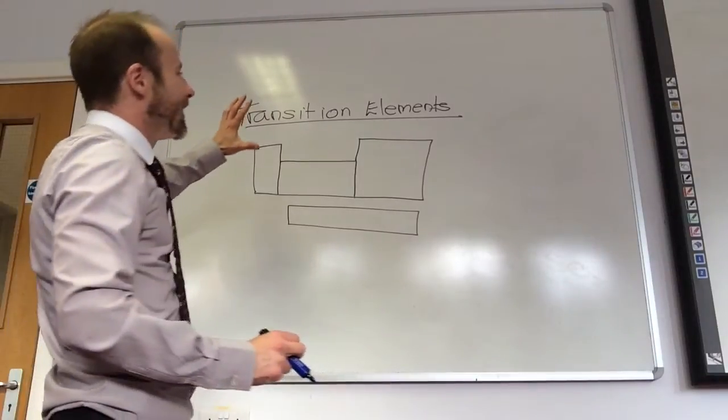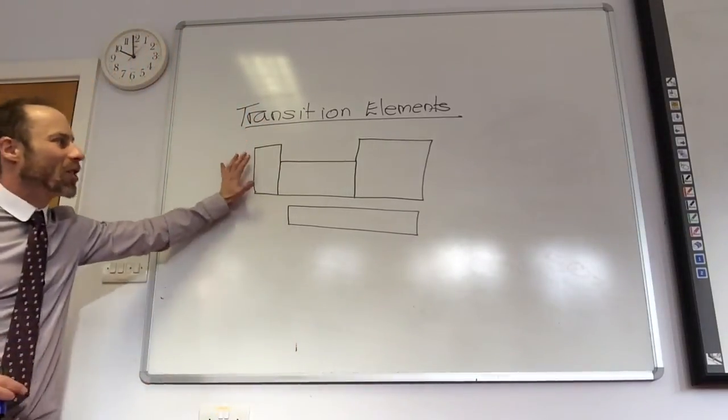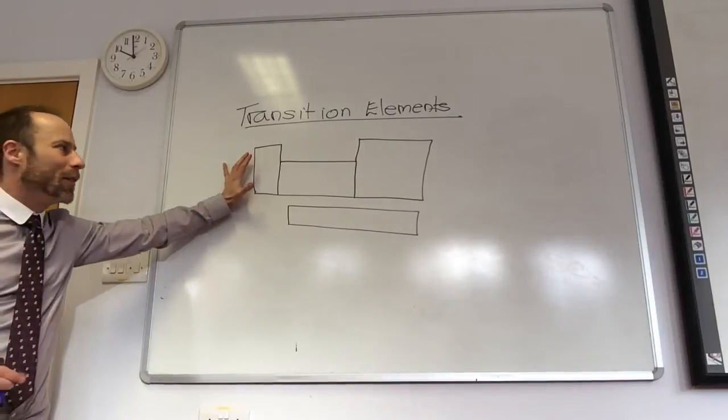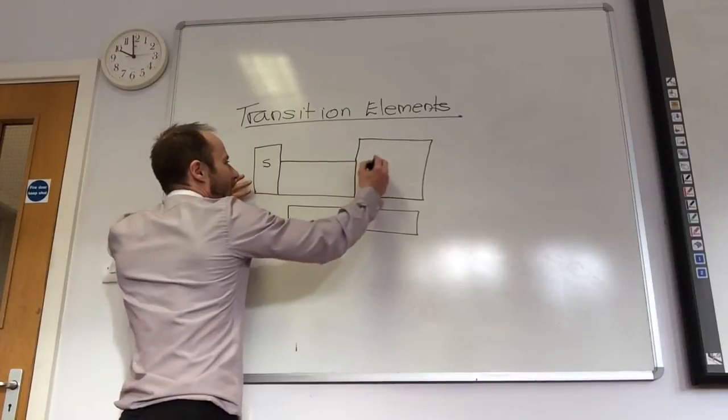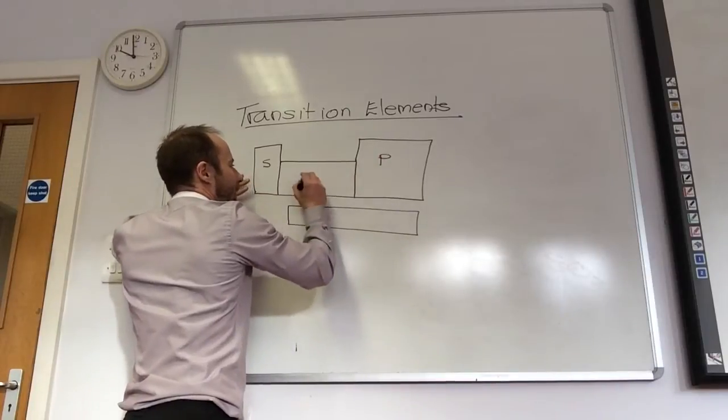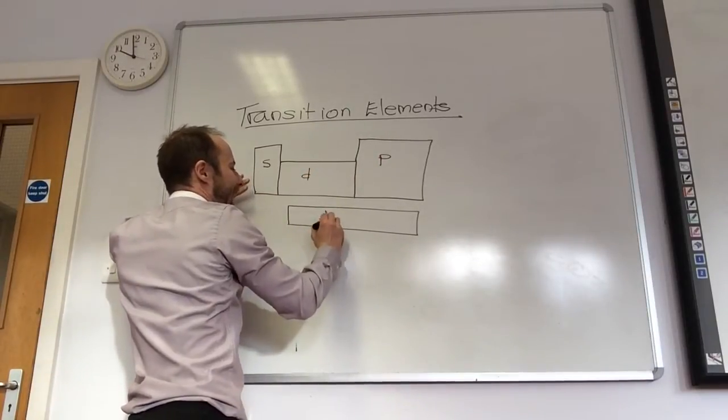So, transitional elements. This is going to be our last time. Just to remind ourselves, in our periodic table, we have the S block, the P block, the D block, and the F block.